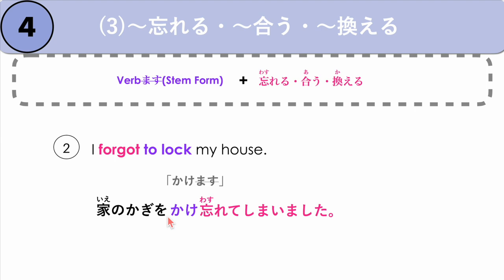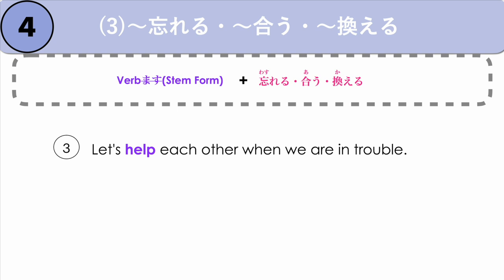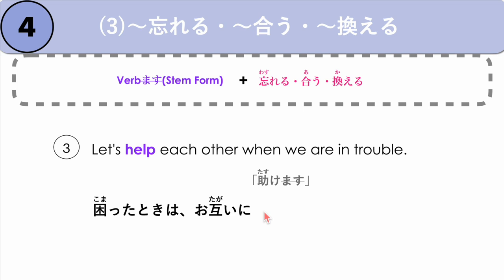Next: let's help each other when we are in trouble — to do something to each other, or to do something together. Komatta toki wa, otagai ni — to each other; otagai ni means to do to each other — our verb is to help: tasukemasu. We get the stem tasuke, plus au. Meaning to do something together or to each other, in this case help each other: tasuke aimasu. Since it says let's help, we use the masu form for invitation. Komatta toki wa, otagai ni tasuke aimasu.